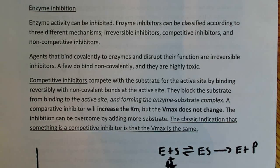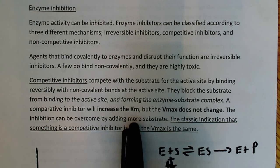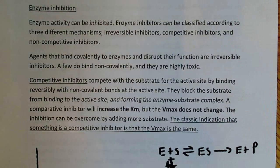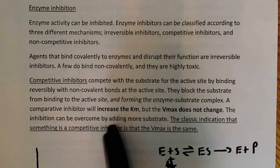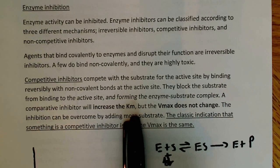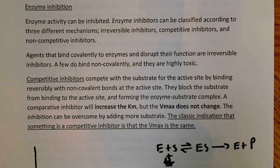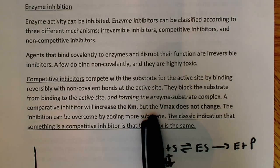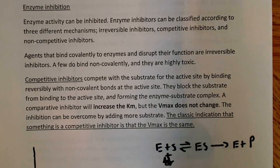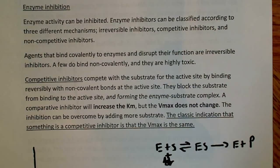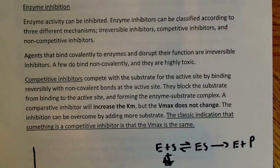The competitive inhibitor will increase the Km — the substrate concentration required to reach one-half Vmax. This makes sense because it takes more substrate to reach the same Vmax. Importantly, the Vmax does not change; inhibition can be overcome by adding more substrate. The classic indication of a competitive inhibitor is that the Vmax remains the same.